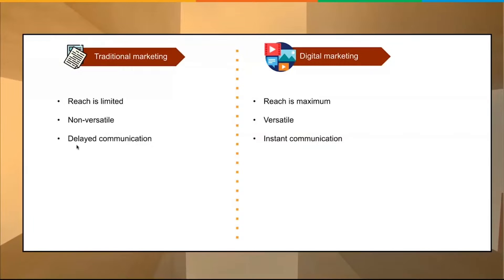With traditional marketing, it's always delayed communication. If you're trying to get a TV spot, there might not be one open until one in the morning. With digital marketing, there are no set hours — you can get your point out there and have people see it instantaneously. Traditional marketing has a lack of real-time results, whereas digital marketing provides instant real-time results.